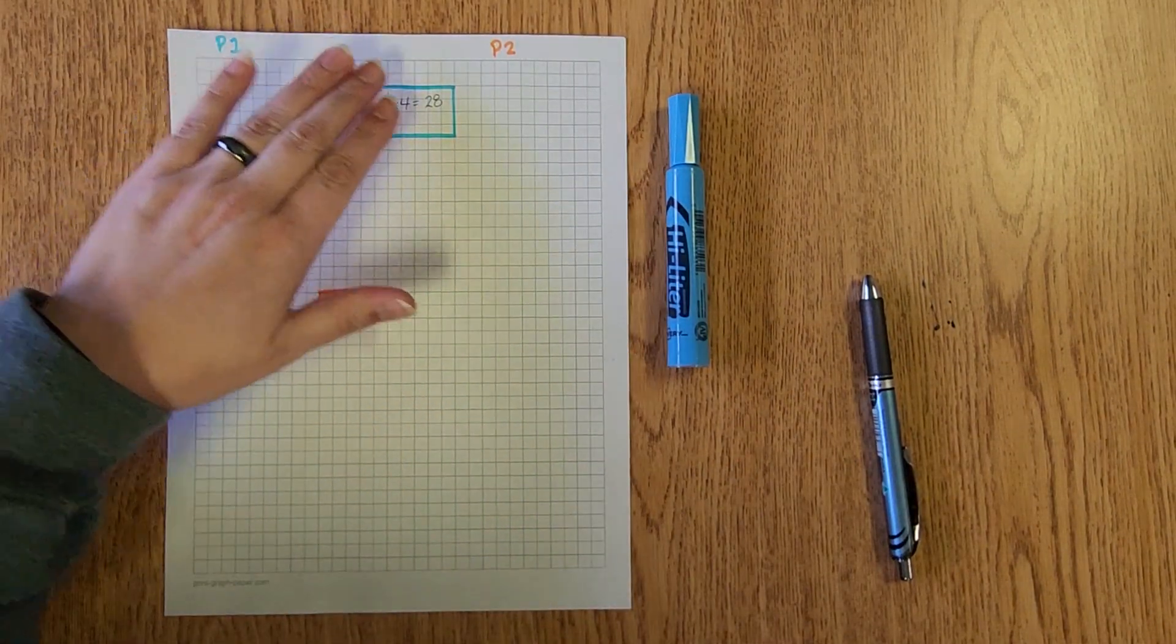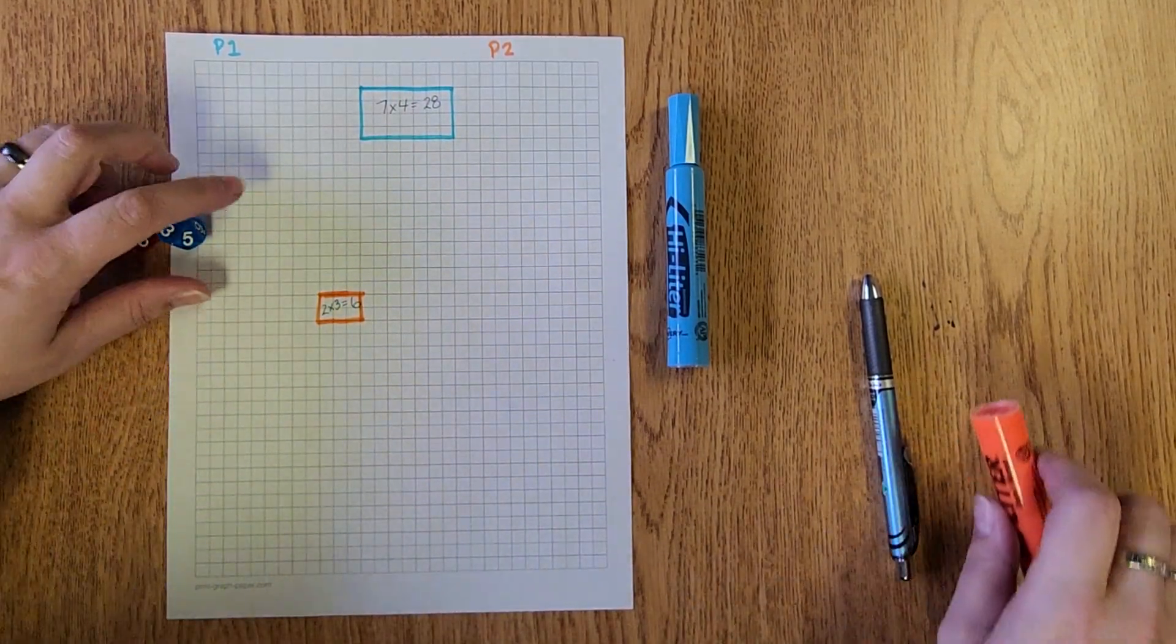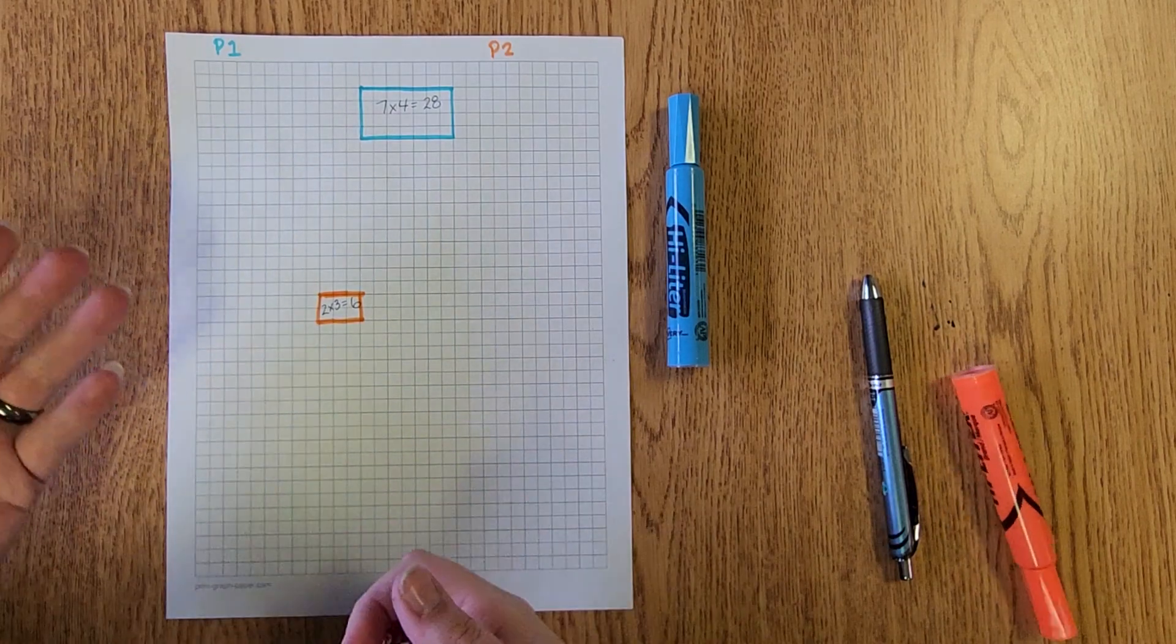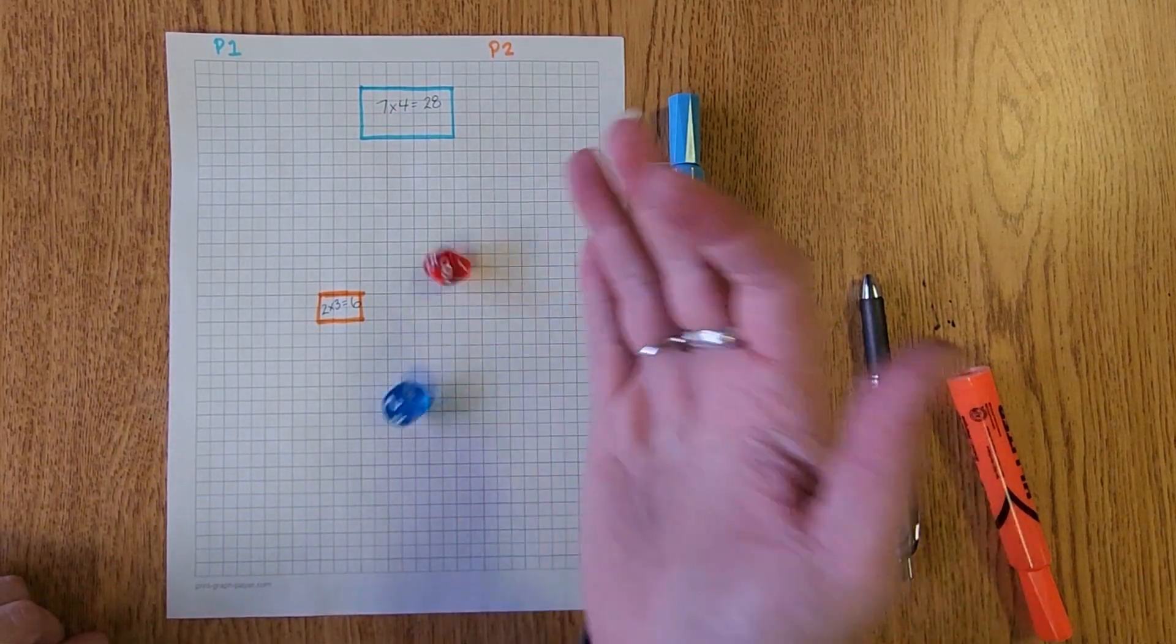At the moment player one or the blue player is taking up significantly more space than the orange player. However because of multiplication the chances for you to change that size change very quickly.